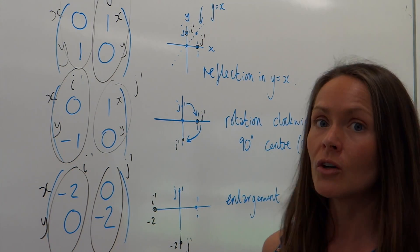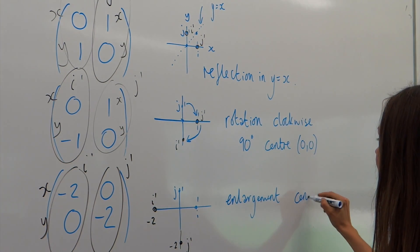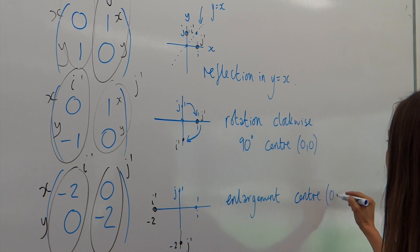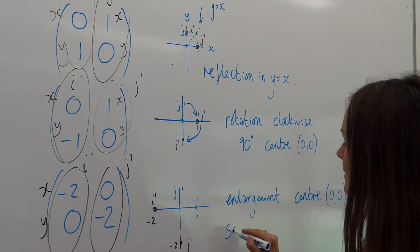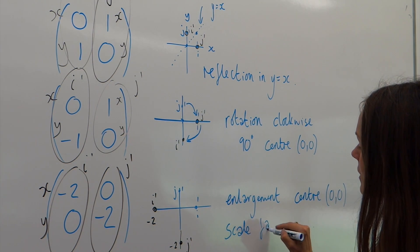With enlargement, you also have to write the centre. So, I'm going to write centre zero, zero. And we also need to state the scale factor. So, remember, when we're dealing with enlargements, the scale factor tells you how much bigger or smaller the shape has become.